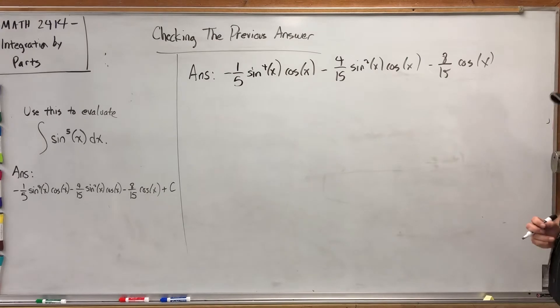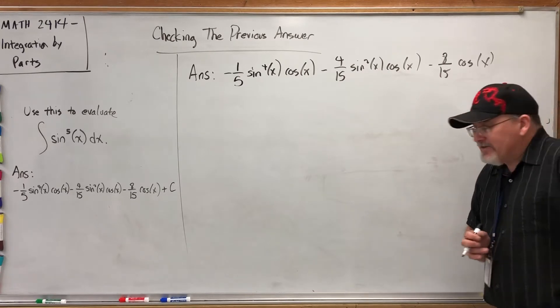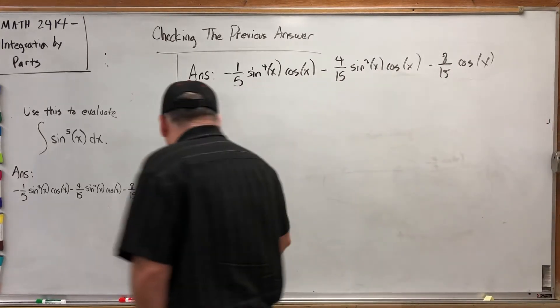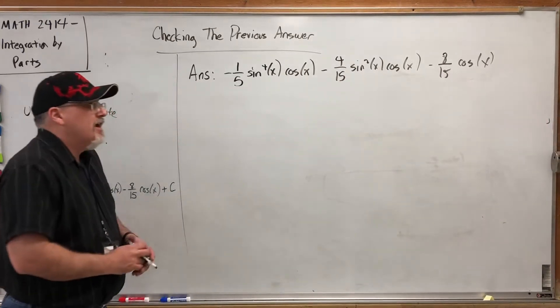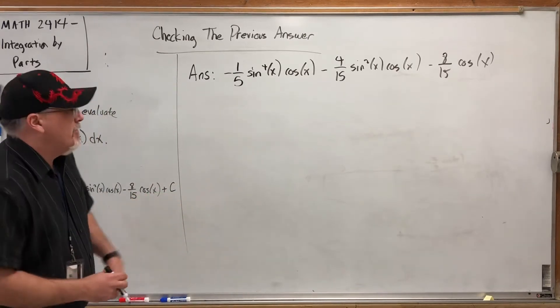We're going to factor out all the things that we can in an effort to make it look a little bit better. All three are negative so we can factor out a negative. Everybody has a cosine, but I'm also going to factor out the fraction, and the easiest way to factor out a fraction is to get them all to have a common denominator and then just factor out one over the denominator.